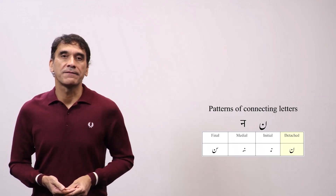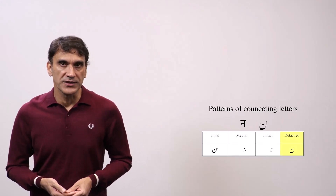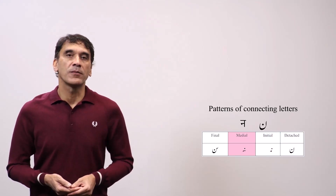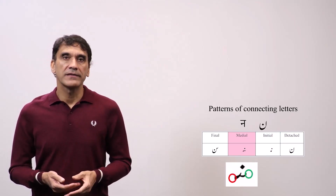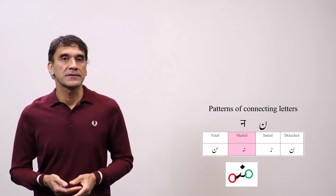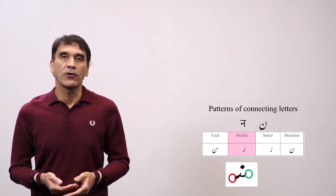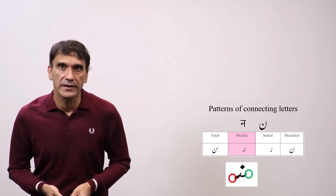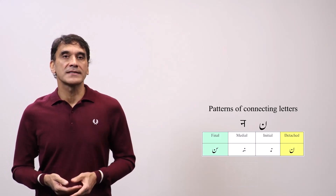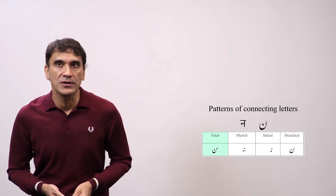In this table, the first one is the detached noon as you find in the alphabet sheet. The initial form looks like this and the medial form looks like this. The green circle shows where the previous letter will be connected with noon and the red circle shows where the following letter will be connected. The detached and final forms are more or less the same, except the final form is attached to the previous letter.